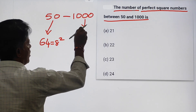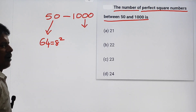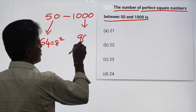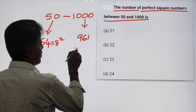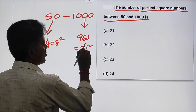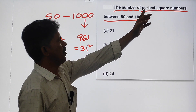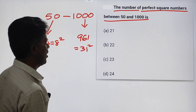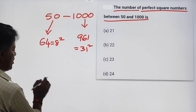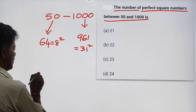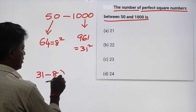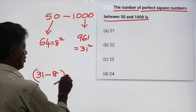The perfect square number just below 1000 is 961, and 961 is 31 squared. So, the number of perfect square numbers between 50 and 1000 is equal to 31 minus 8 plus 1.